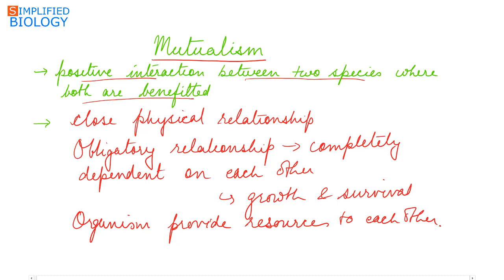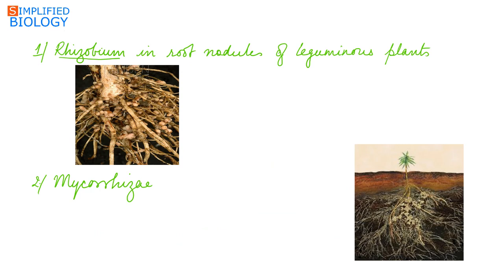Mutualism is an interaction between two species where both are benefited. It is a close physical relationship and they are completely dependent on each other — they cannot live separately — and each one provides a resource to the other.